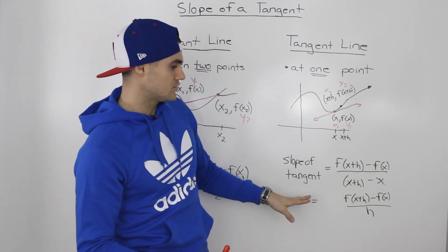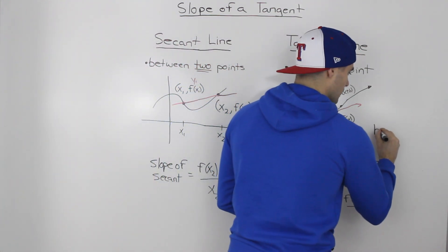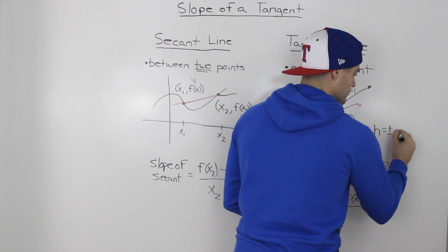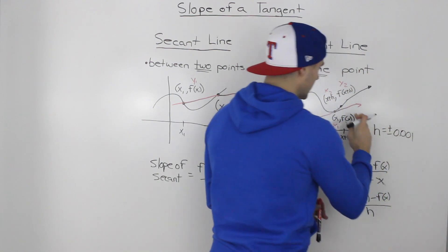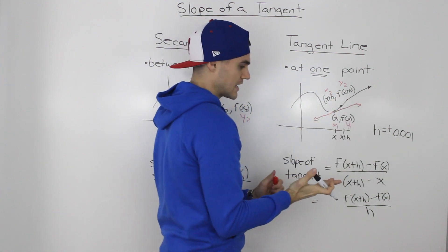So what we would do usually is we would take this difference quotient and then plug in very small numbers for h, like plus or minus 0.001, to get a coordinate that's very, very close to that coordinate for which we have the slope of the tangent on.